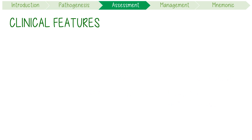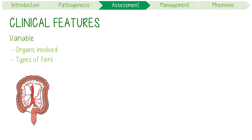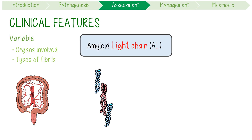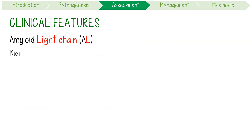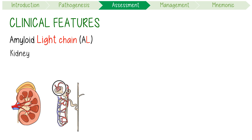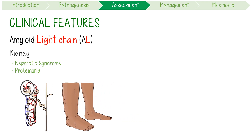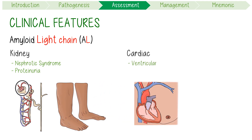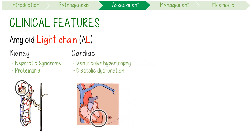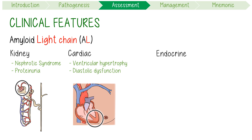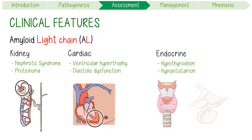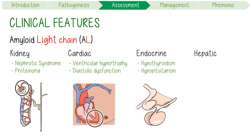The clinical features of amyloidosis are highly variable and very dependent on which organs are involved and what type of fibrils form. Using amyloid light chain as an example: AL can have kidney involvement, specifically inside the glomerulus, which can cause nephrotic syndrome. Subsequent proteinuria can result in often severe hypoalbuminemia and consequently cause significant pedal oedema and even anasarca. Cardiac deposition often results in ventricular hypertrophy and diastolic dysfunction. Endocrine involvement can cause diverse sequelae from hypothyroidism to hypopituitarism.